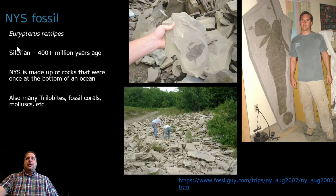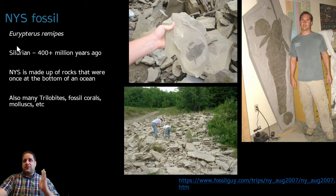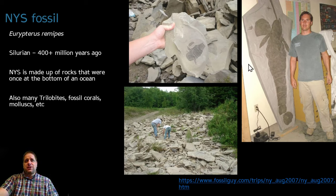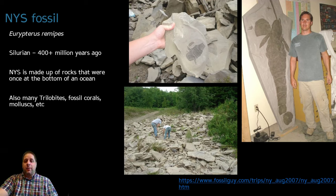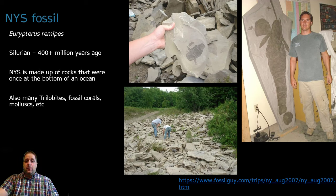Here is a collection of New York State fossils. The New York State fossil — the official state fossil — is Eurypterus remipes, which is a type of sea scorpion. Some of them are very large, some relatively small. This is an organism that lived in the Silurian, around 400 million years ago. New York State is made up of rocks that were once at the bottom of an ocean, so this is not a land animal — it's an extinct species that lived in the ocean.